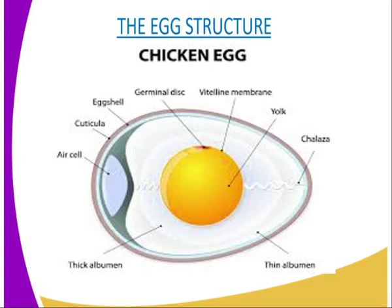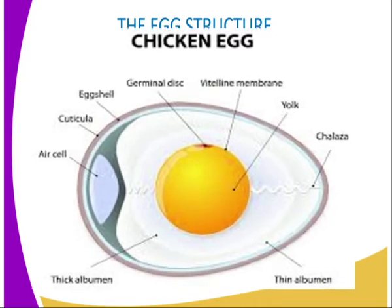Then we have the air space or air cell. It is a cell which is filled with air, and this air is utilized during development of the chick, because the chick normally requires oxygen for respiration to take place, so that it can have the energy for growth and development.